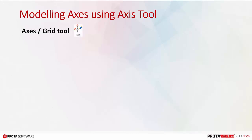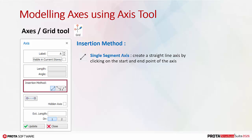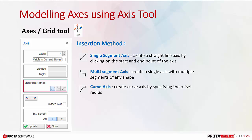There are three insertion methods for creating an axis. Single Segment Axis: create a straight line axis by clicking on the start and end point. Multi-segment Axis: create a single axis with multiple segments of any shape. Curve Axis: create a curve axis by specifying the offset radius.